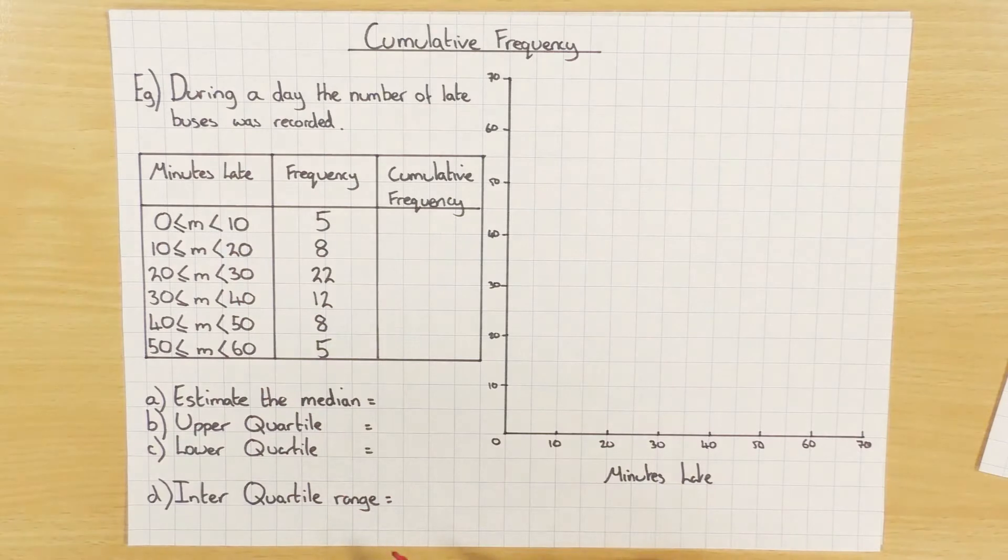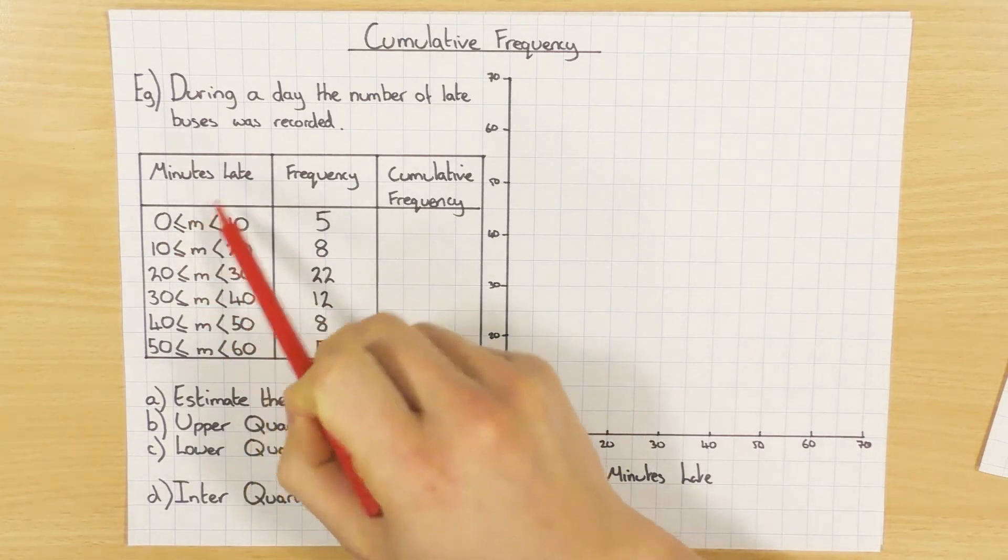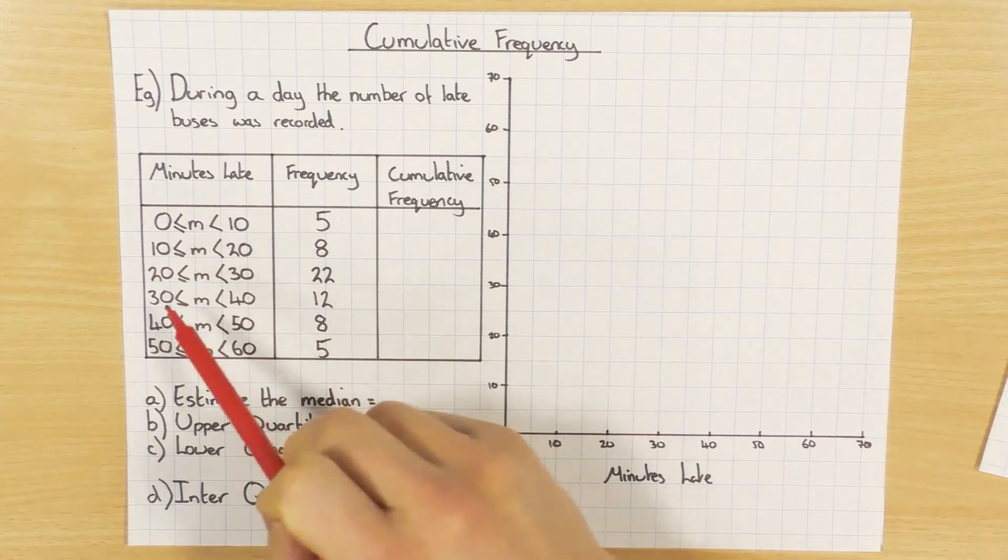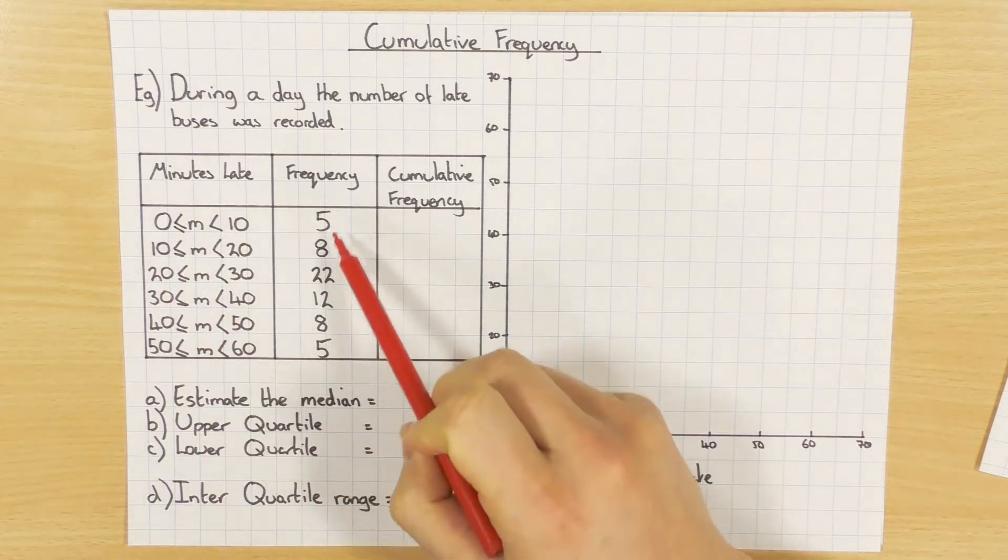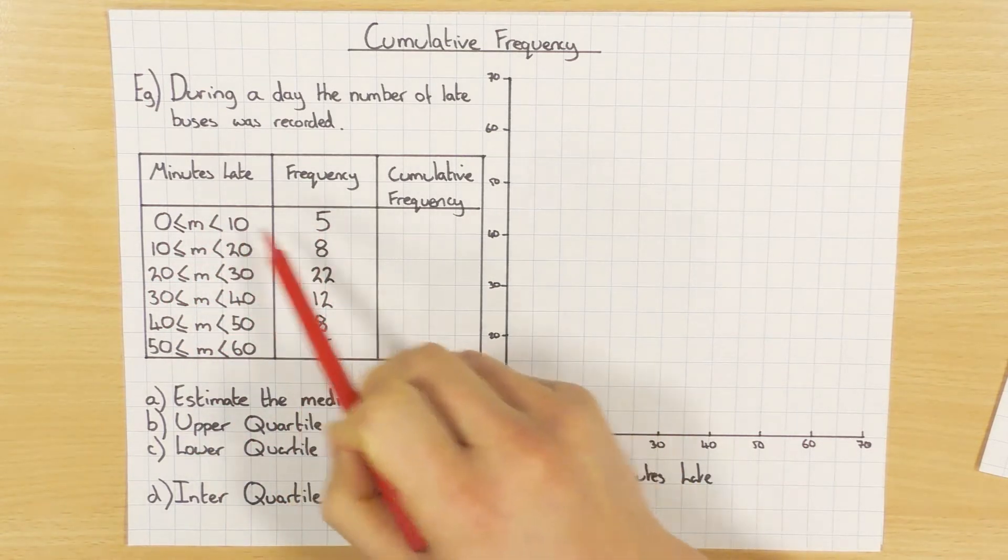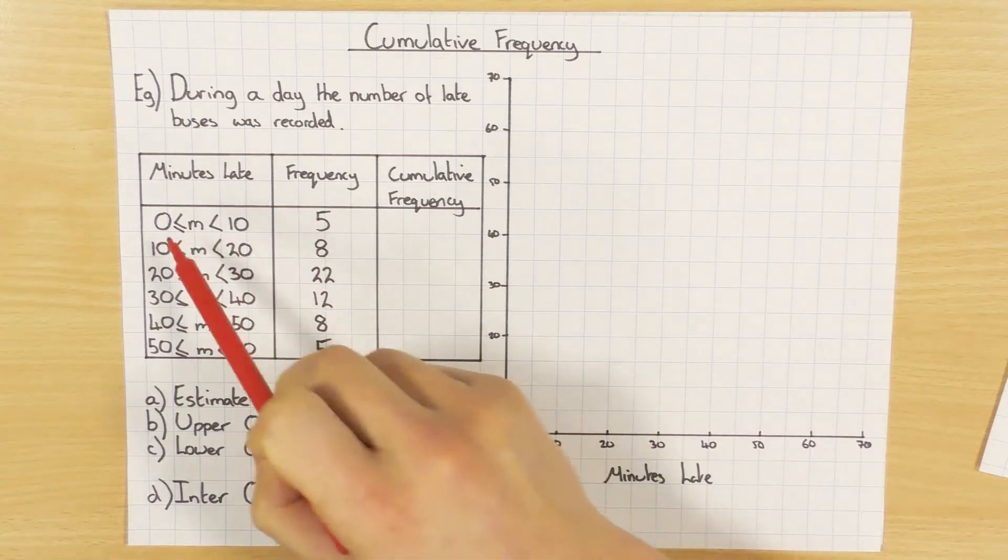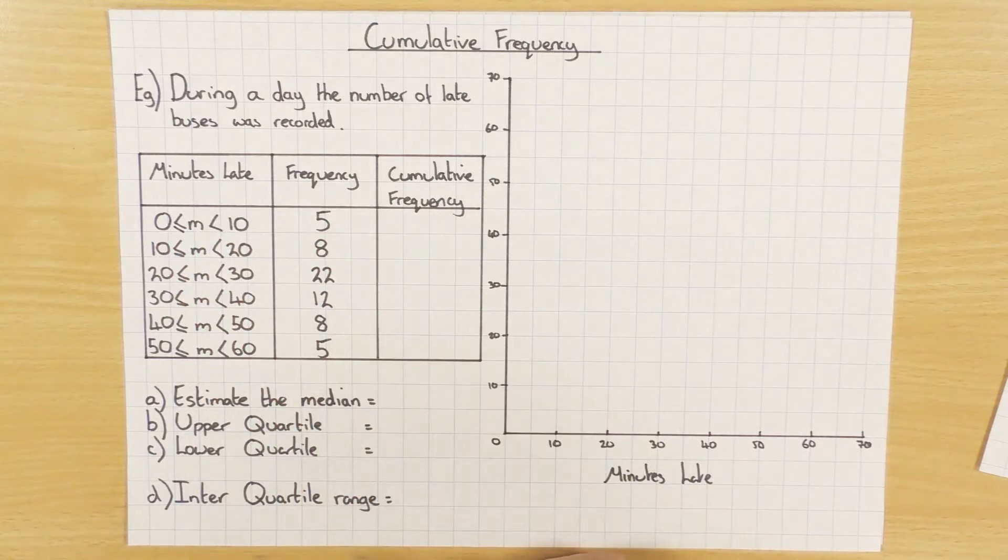So if I have this example here, during a day the number of late buses was recorded. So here's the number of minutes late, between 0 and 10, 10 and 20 and so on, and here I have the frequency. So how many buses were between 0 and 10 minutes late, it was 5 and so on and so forth.